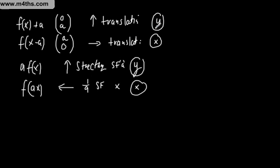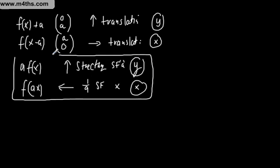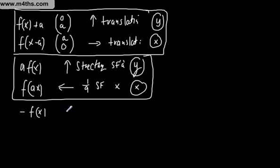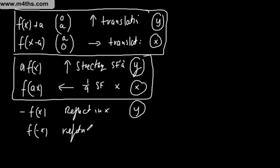And then, finally, we looked at reflections. So, these are stretches. These are simple translations. They all fall under transformations. And then we had negative f(x) was reflecting in the x and it was for y coordinates that changed. And then we had f(-x) which reflected in y-axis, and the x's were influenced or changed.